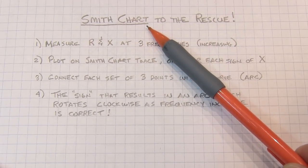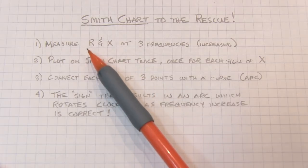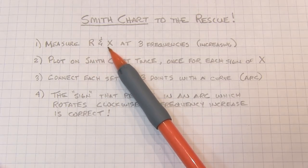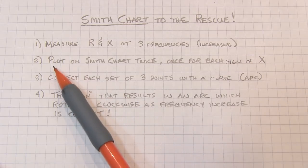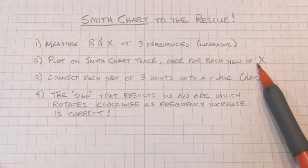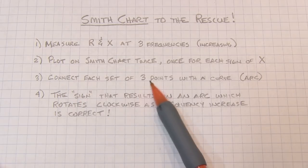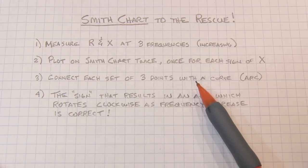Now the answer is Smith chart to the rescue, using a very simple process. We make three measurements of the resistive and reactive components at three frequencies in increasing order, and we plot these on the Smith chart twice, once for each sign of X, and then connect each of these sets of three points with a curve. So we wind up with two curves on the Smith chart.